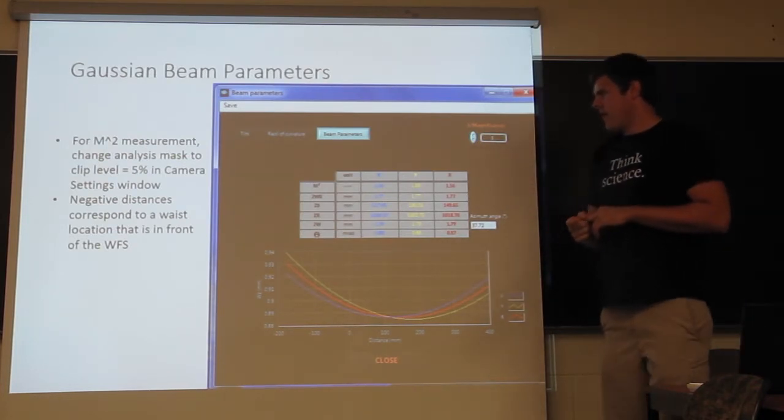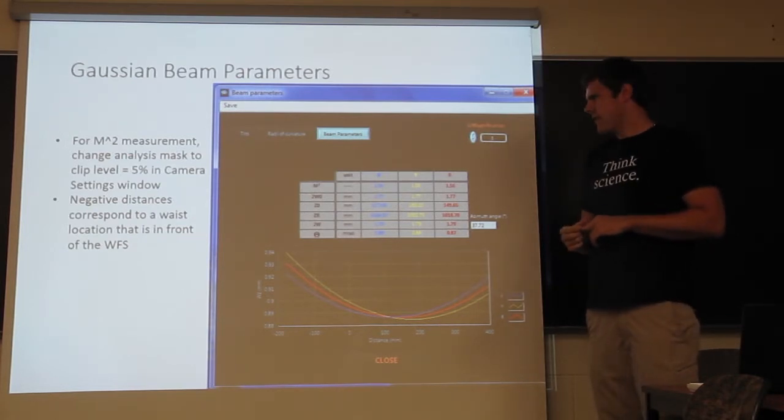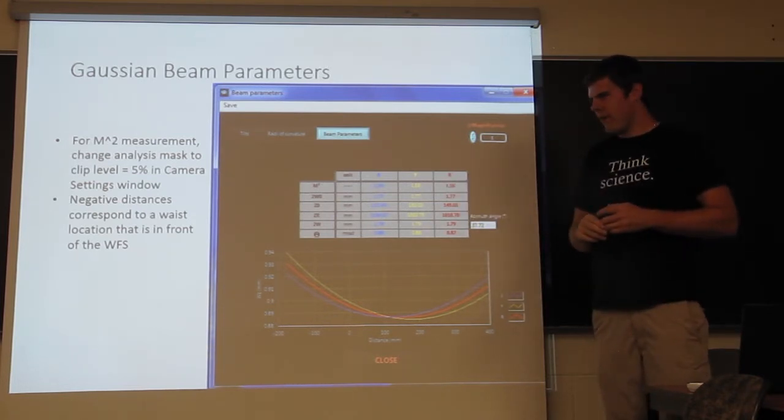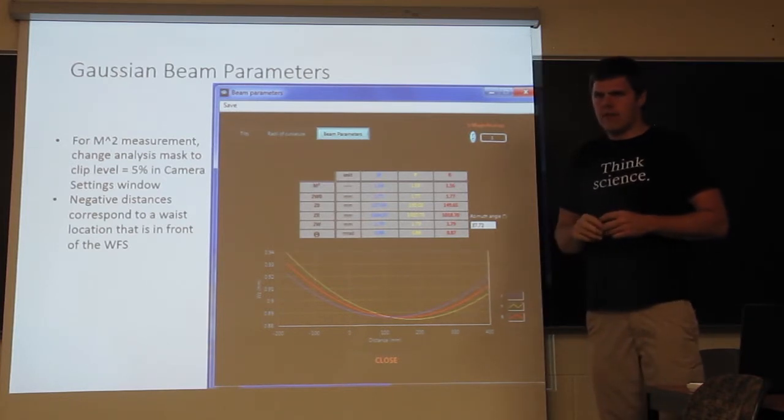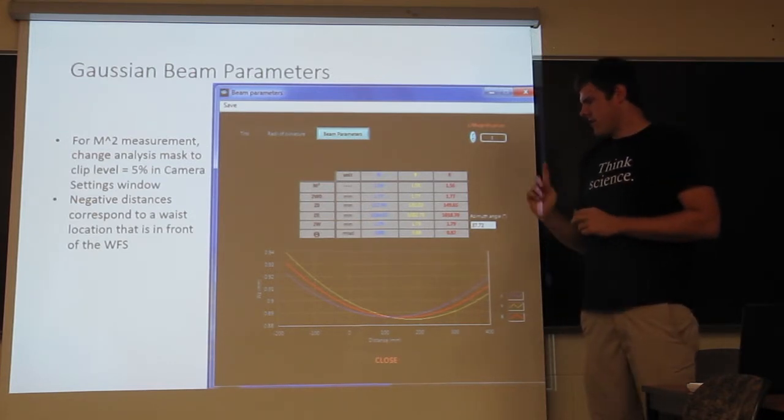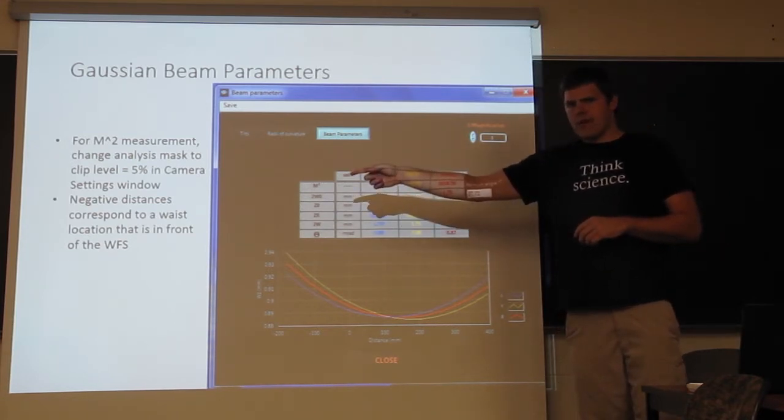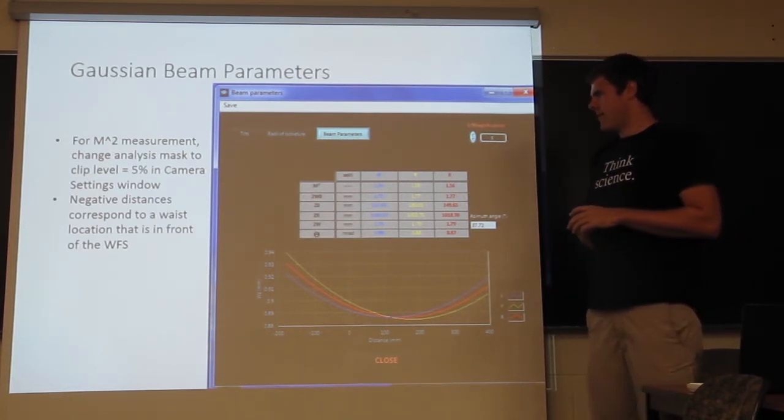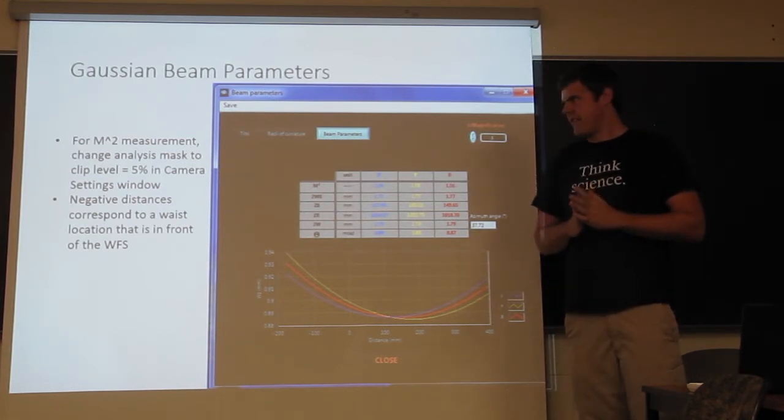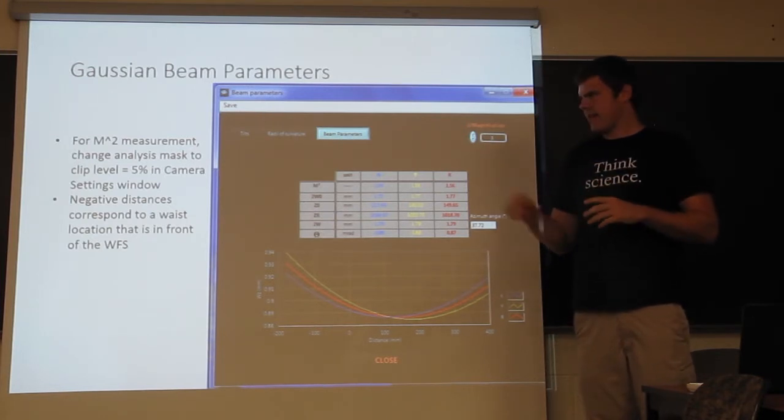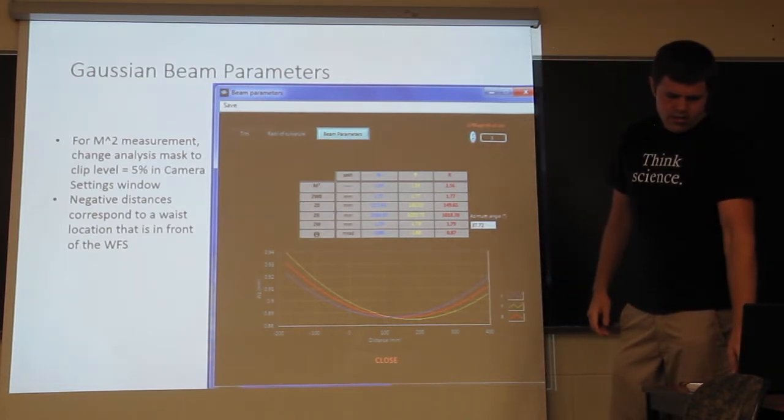So, these beam parameters are a calculation assuming a Gaussian beam, so this can take your wavefront that's hitting the camera, and then give you the Rayleigh range, the beam waist, and actually the beam waist location. So, this is helpful if you want to know where your beam waist is, and just to note that when you have a negative number here, that corresponds to a distance in front of the camera, so that can help you locate where the beam waist is. And then I was told by Phasix that if you want to measure an accurate M squared measurement, that you should reduce the clipping in the camera settings window for your analysis mask down to 5%.